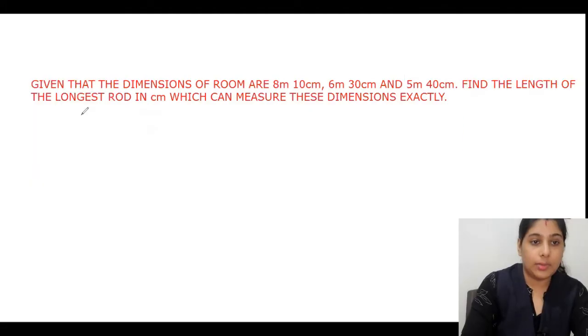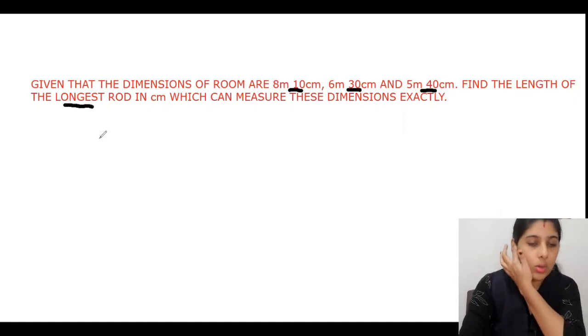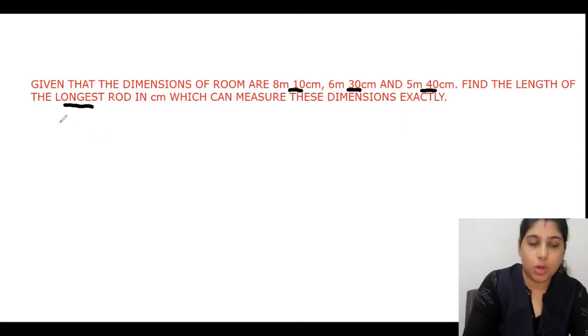Let us watch the session. Given that the dimensions of a room are 8 meter 10 centimeter, 6 meter 30 centimeter, and 5 meter 40 centimeter, find the length of the longest rod in centimeters which can measure these dimensions exactly. Longest rod means maximum. I already told you, when these types of maximum or longest problems come, you have to find HCF.